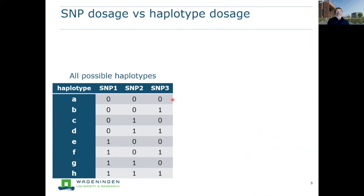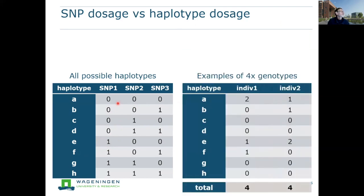For a haploblock consisting of three SNPs, there are eight possible haplotypes — just two to the power of three. With longer haploblocks with more SNPs, you will have more possible haplotypes. Here are two examples of tetraploid individuals: individual one has two times haplotype A, one E, and one F; individual two has one A, one B, and two times E. The total is always four in both cases because we're talking about tetraploids.